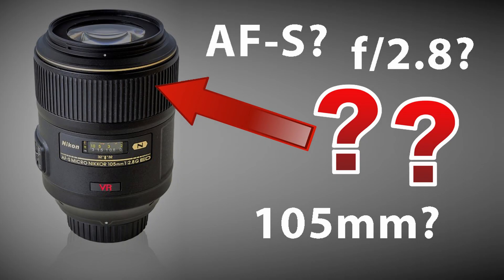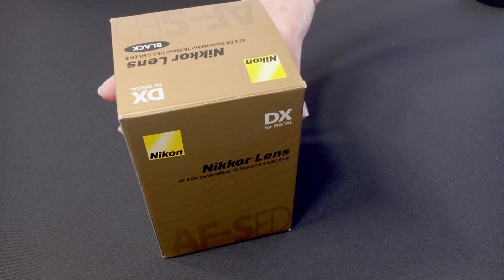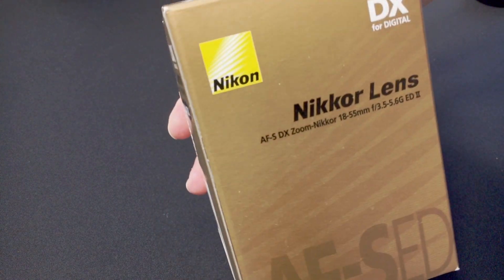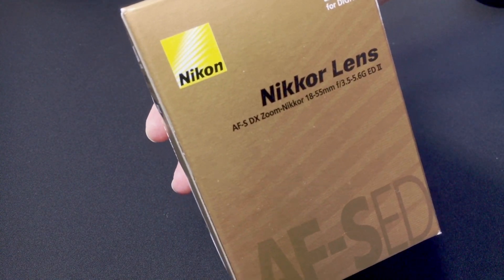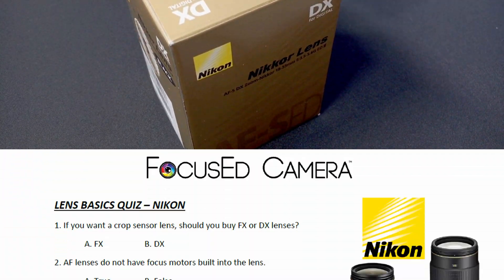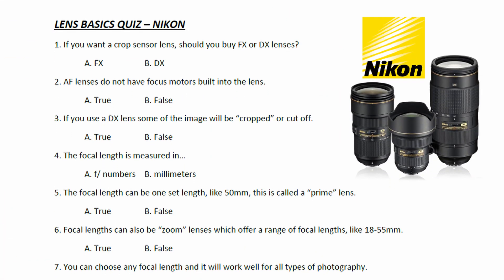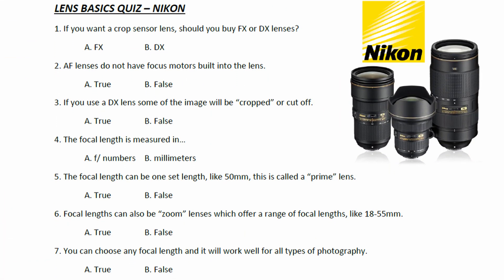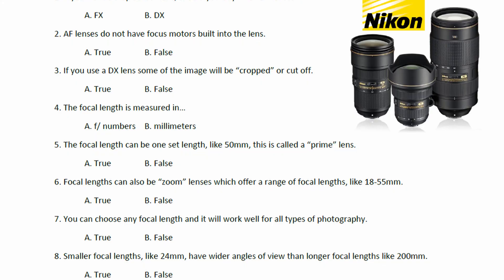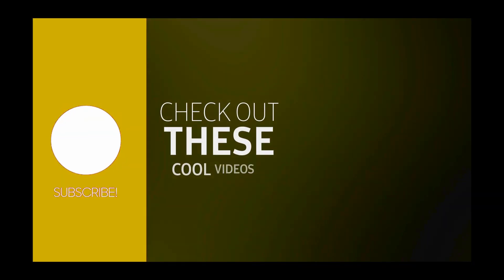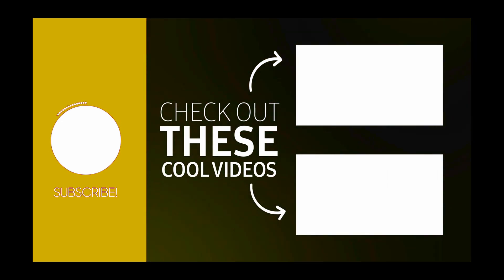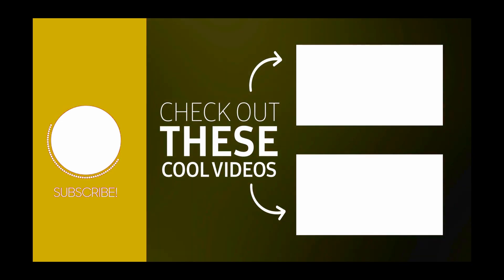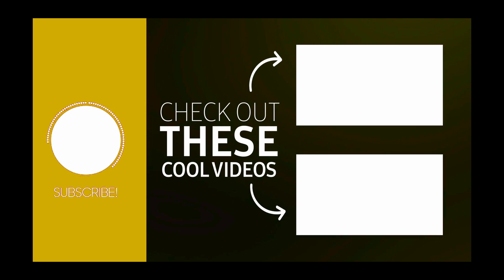Buying a lens can be confusing, but by doing your research, checking the specs, and knowing a few key abbreviations, you'll be able to buy camera glass with confidence. If you want to test out your understanding, check out the mini quiz in the description below. I hope you've learned something from this video — please consider subscribing to our channel, and click here for more videos from the Focus Camera channel. Thanks for watching!